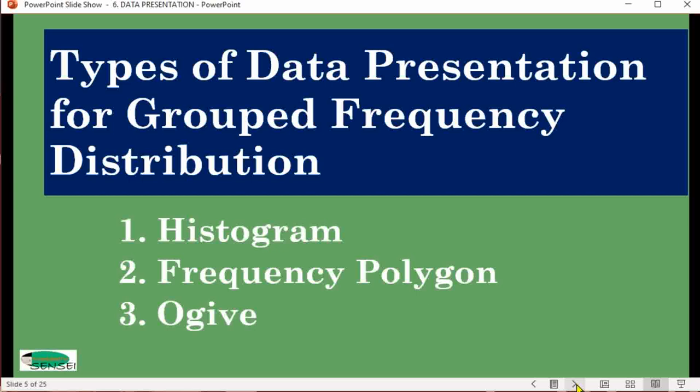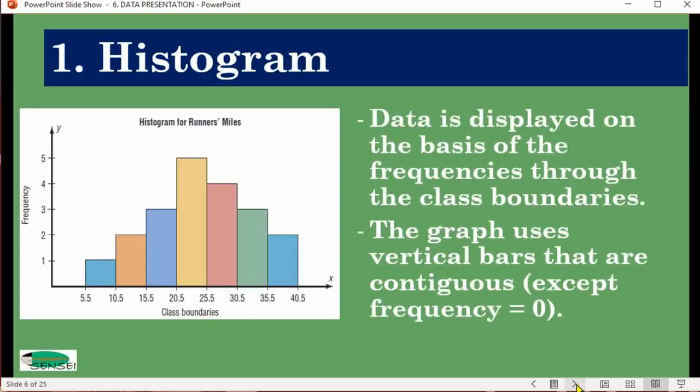What is a histogram? It's made using the frequencies in the frequency distribution and the class boundaries. The description of the graph is that we use vertical bars that are contiguous. When you say contiguous, these graphs are connected with each other. There's no space in between.